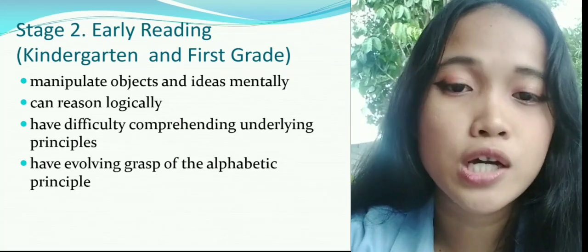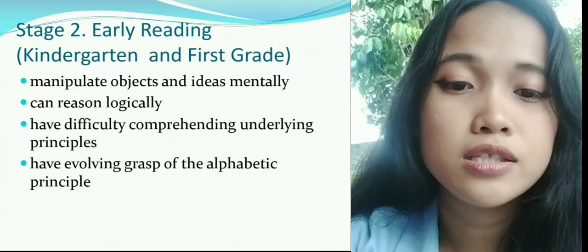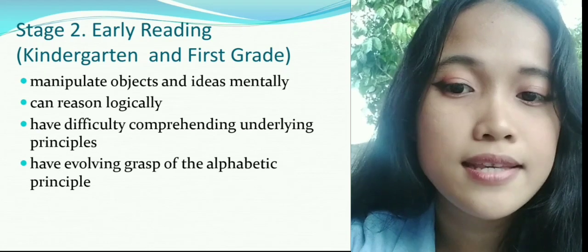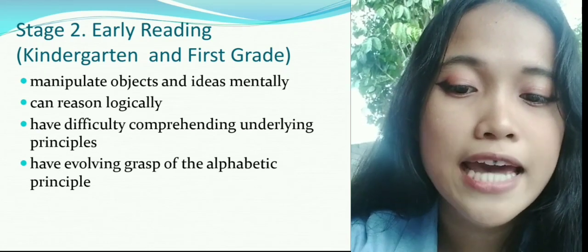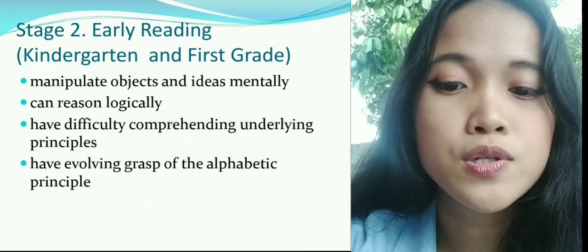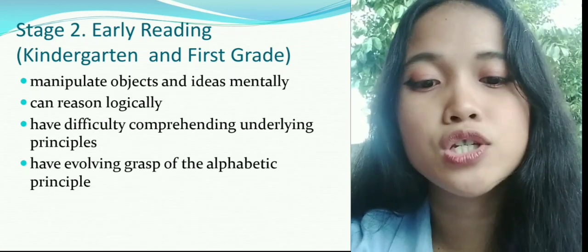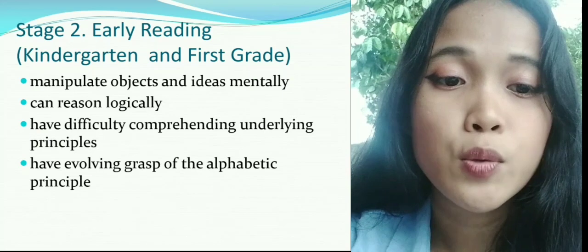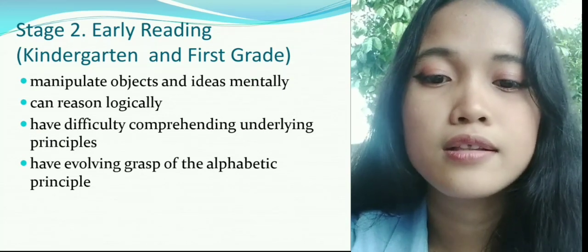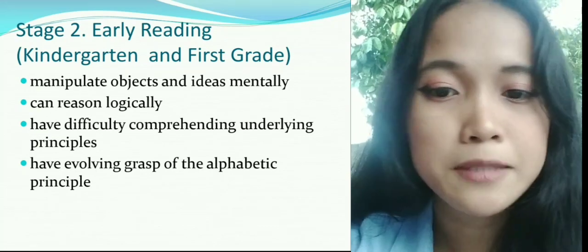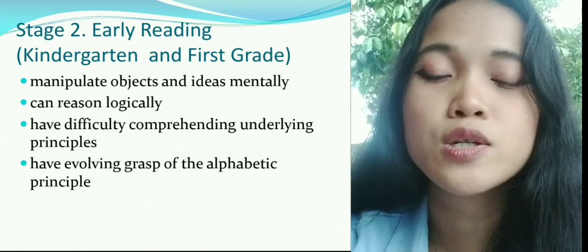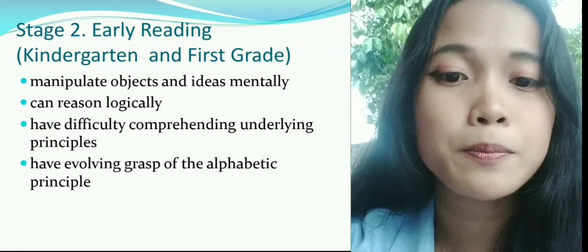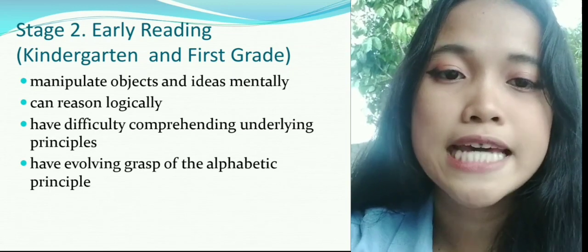In this stage, the child slowly uses their background knowledge and makes connections about what they read. They also ask questions, use all the senses, and draw a picture of what they see when they read the text. They have difficulty in comprehending underlying principles because in this stage their level of comprehension is not yet improving. Once students understand how to relate what they are reading to other books, to the world they live in, and to their own life, they will start making personal connections to what they read, which enhances comprehension and understanding. They also grasp the alphabetic principle — connecting letters with sounds to read and write.